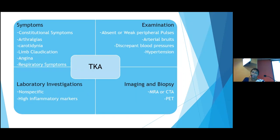In Takayasu's arteritis, systemic symptoms are common across all categories. Additionally, patients can have arthralgias, carotidynia, lymphadenopathy, angina, and respiratory symptoms. Examination findings include absent or weak peripheral pulses and arterial bruits. A difference in blood pressure between limbs and hypertension are striking features. Laboratory investigations are non-specific with high inflammatory markers. MR angiography and CT angiography are helpful imaging investigations. Those are the large vessel vasculitis entities.